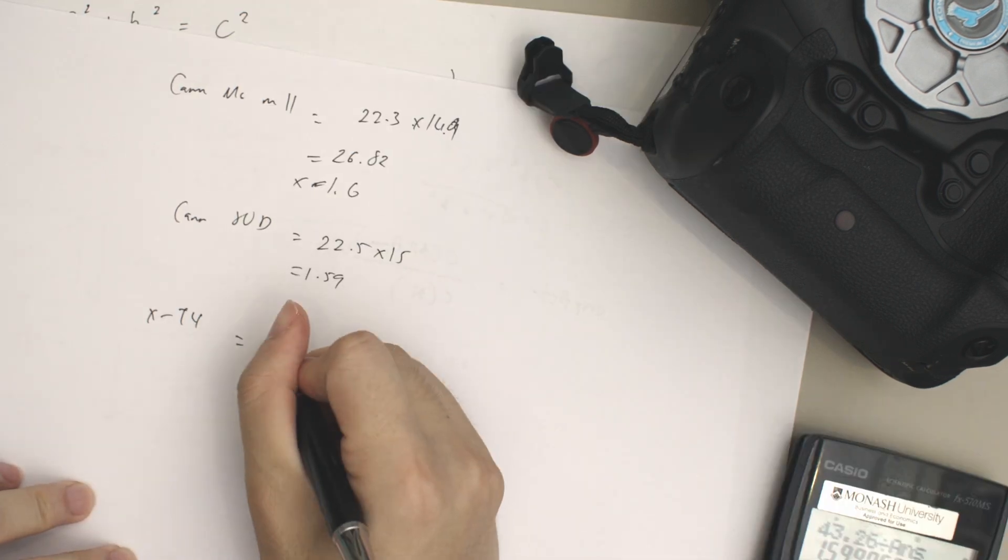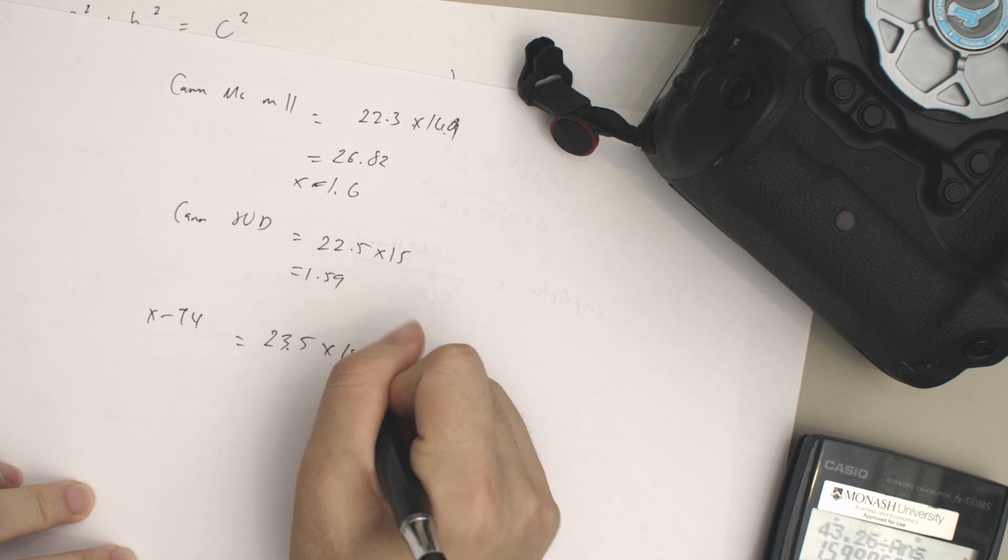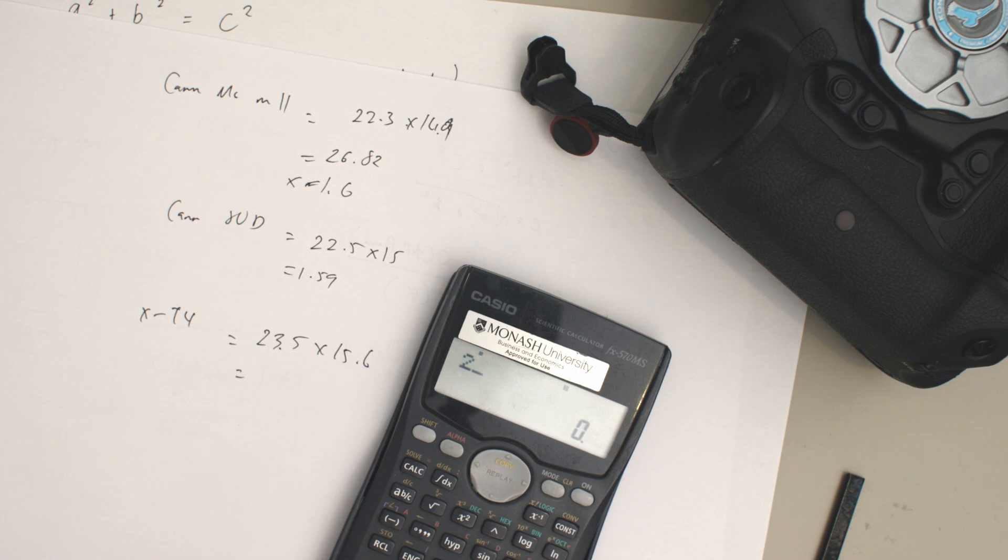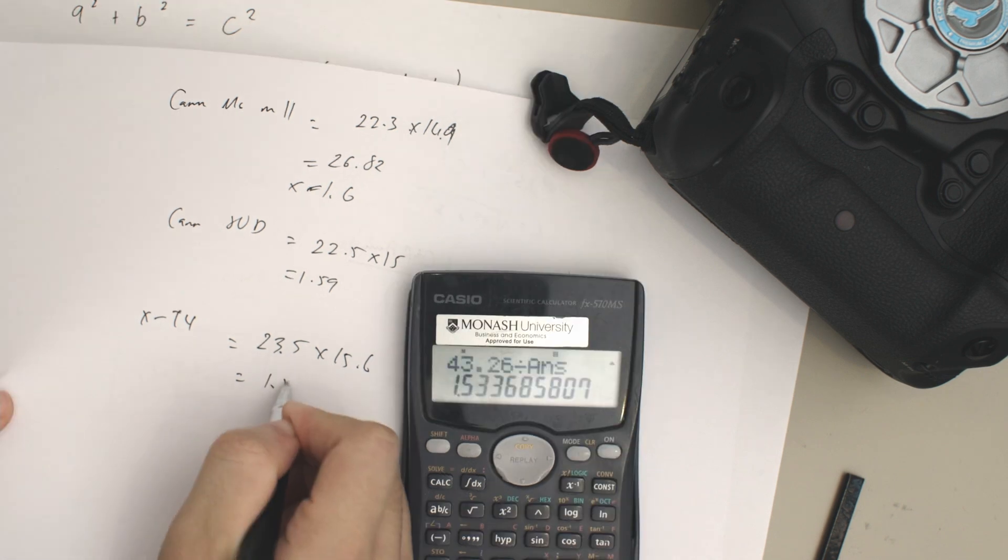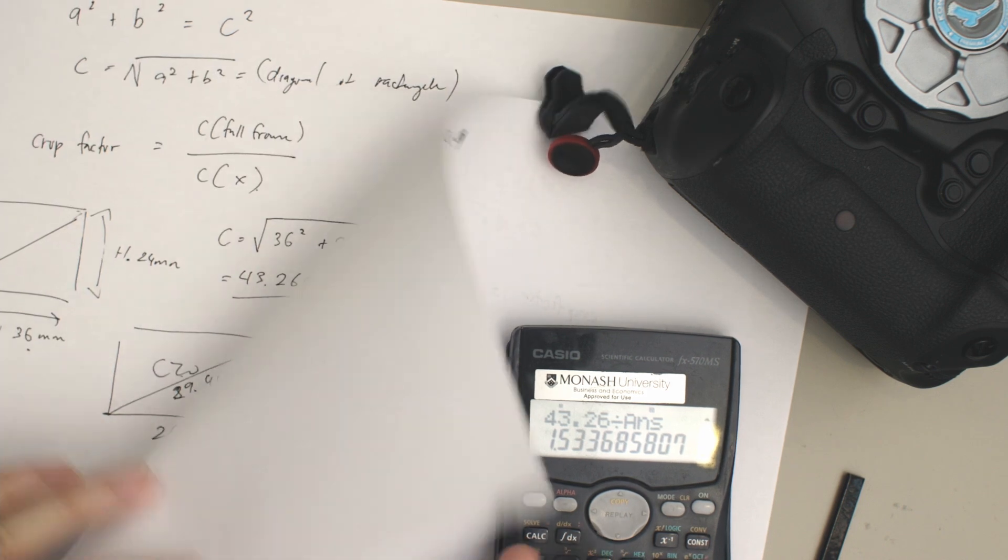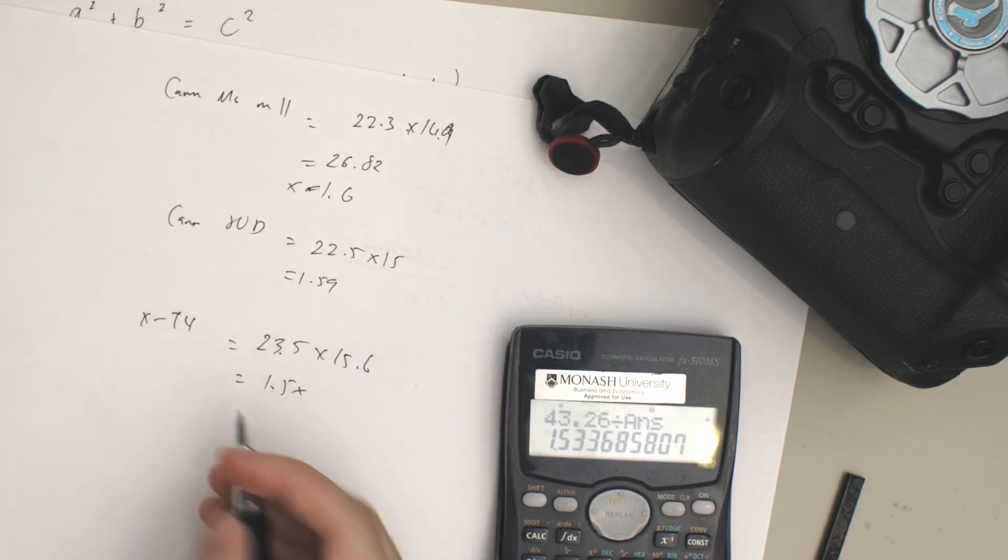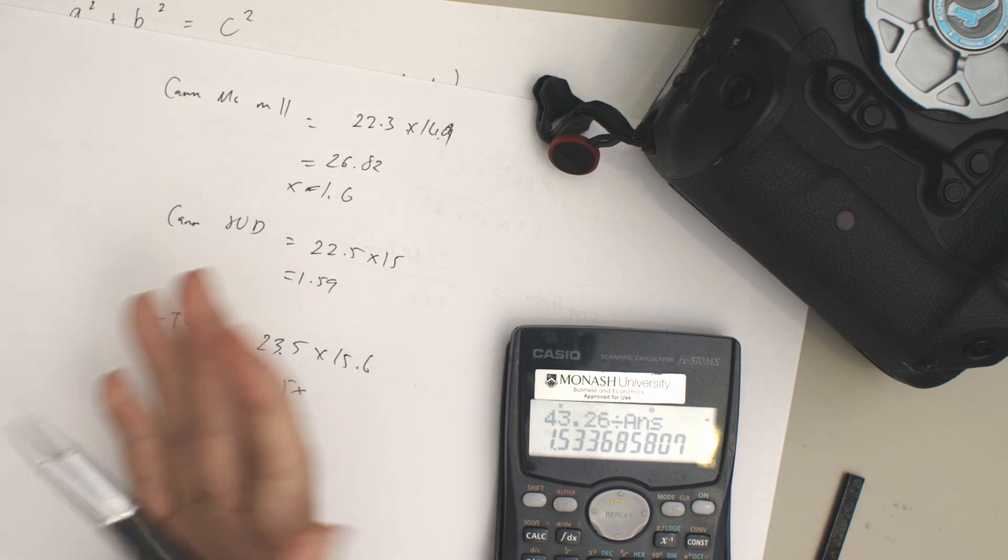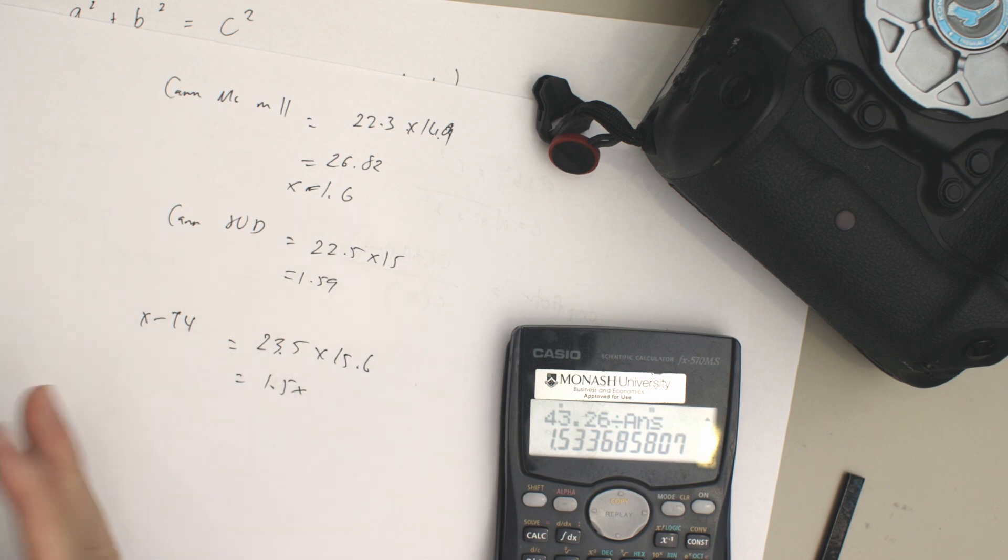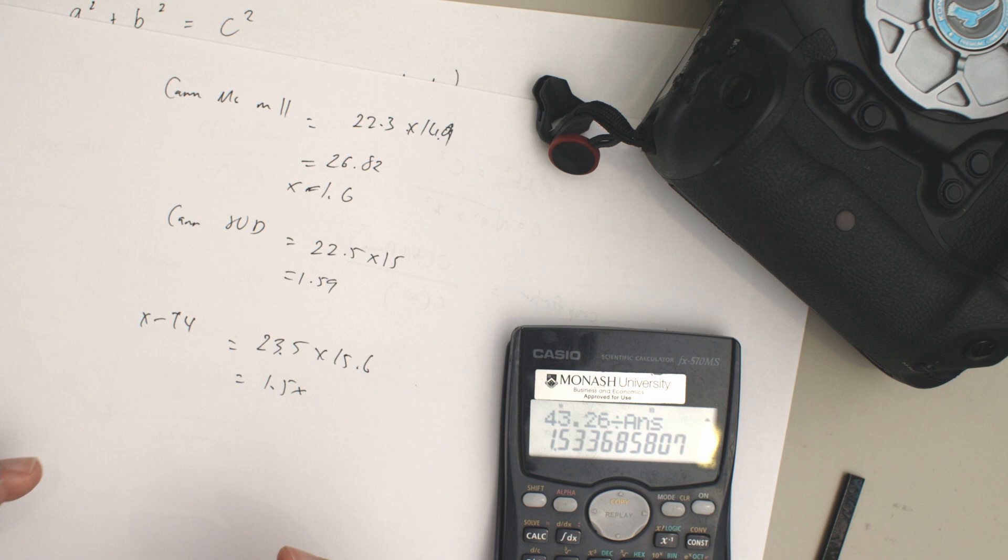The Fuji X-T4 has a sensor size of 23.5 by 15.6. If we input that into our calculator, we get a crop factor of 1.5, which is closer to what most of the common crop factors are for APS-C, even the same with the Sony a6500, the Nikon Z50, the Nikon D5300 if I'm not mistaken. You can go home and do the calculations yourself.